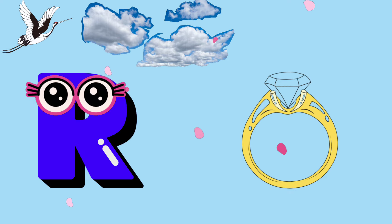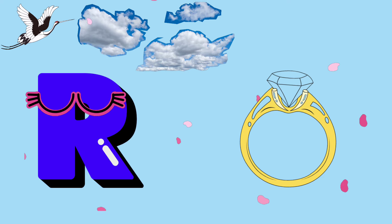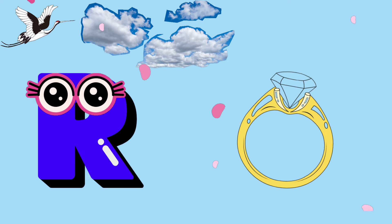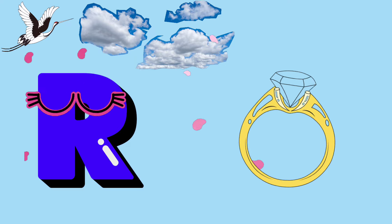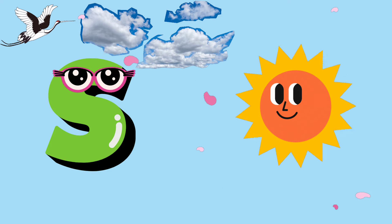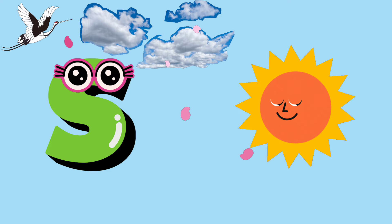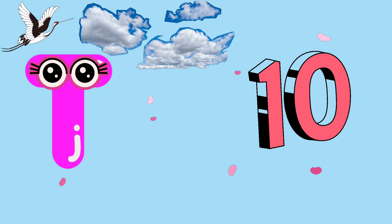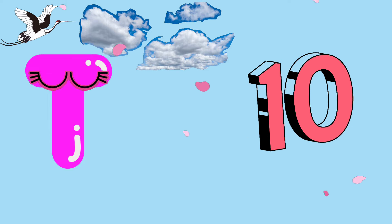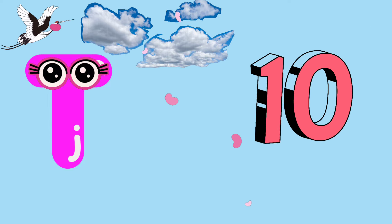Q is for question, qu-qu-question. R is for ring, r-r-ring. S is for sun, s-s-sun. T is for ten, t-t-ten.